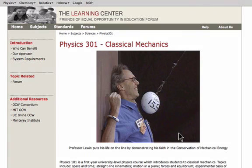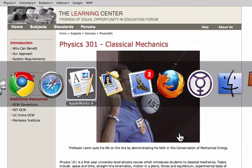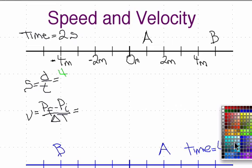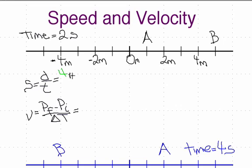Alright, let's go over some problems. Here are the number lines — the same ones used for distance and displacement, because speed and velocity are like distance and displacement except they incorporate time. For speed, which is distance divided by time: we started here and ended over here. We went 4 meters, and the time given is 2 seconds.